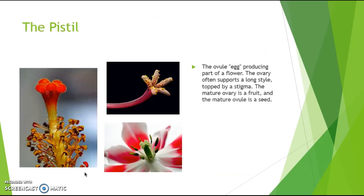The pistil is the egg-producing part of the flower. The egg is known as the ovule. Keep in mind that the pistil is not the egg or the ovule itself — it produces the egg and the ovule.